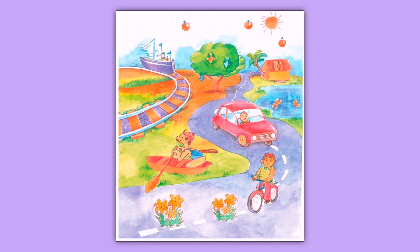Next हम इस picture में और क्या funny thing note कर रहे हैं — घर के सामने एक pond बना हुआ है, blue color के पानी से भरा हुआ। जैसे कि बच्चों आप लोग जानते हैं, pond में duck, swan होते हैं या fishes swim करती हैं। लेकिन इस funny picture में pond में butterflies swim कर रही हैं — butterflies swimming in the pond — जो कि possible नहीं है। So this is the last and tenth funny thing we can see in this picture.